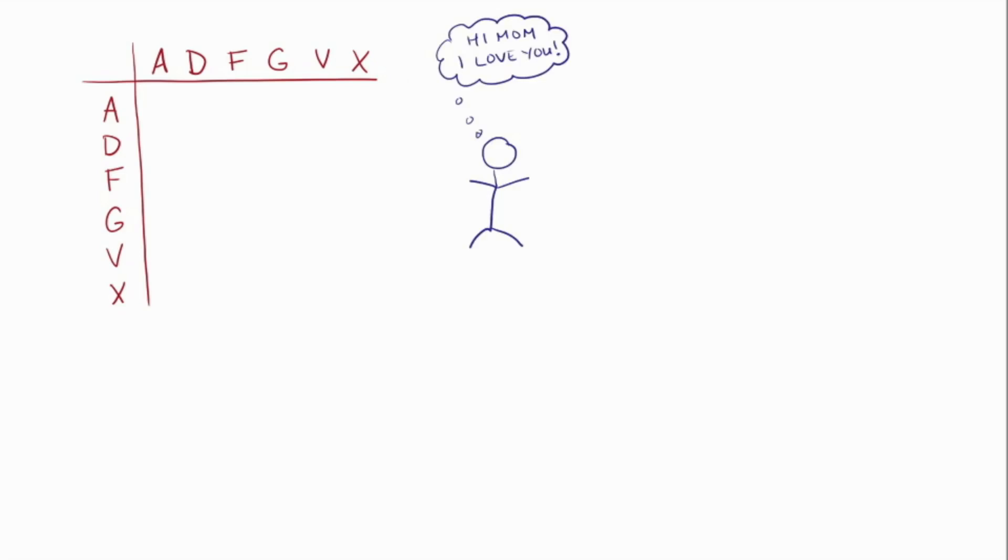You pick a message like hi mom I love you, and then you write that message left to right, top to bottom into the table. Except if you see any repeat letters, you leave them out because we don't want any letters repeated inside the table. We want one of each letter and digit. So that's what's left of the message hi mom I love you.